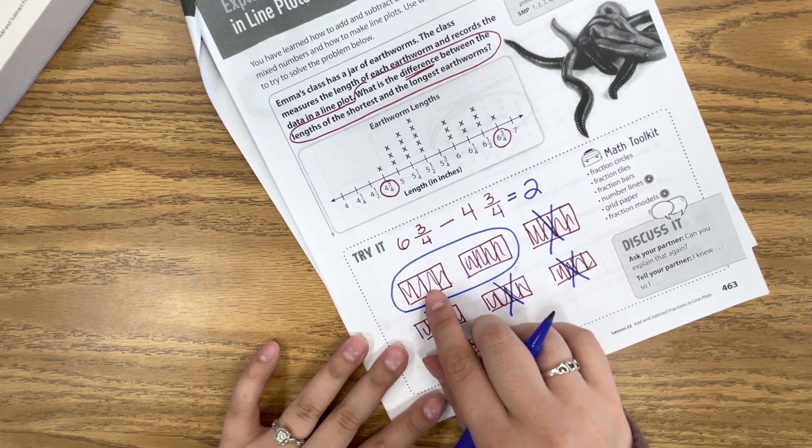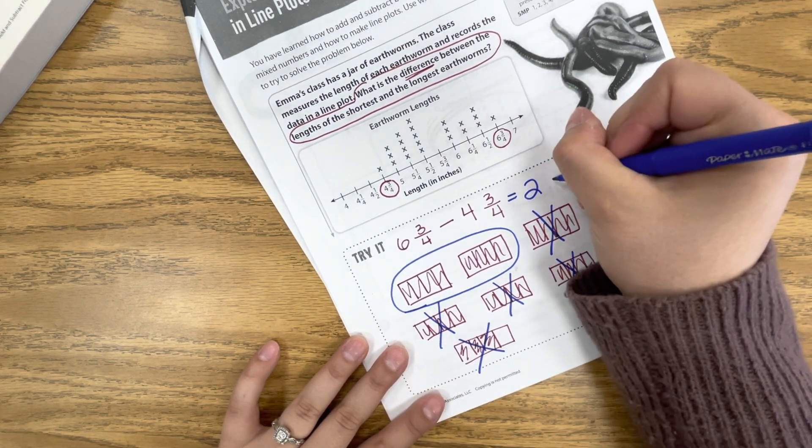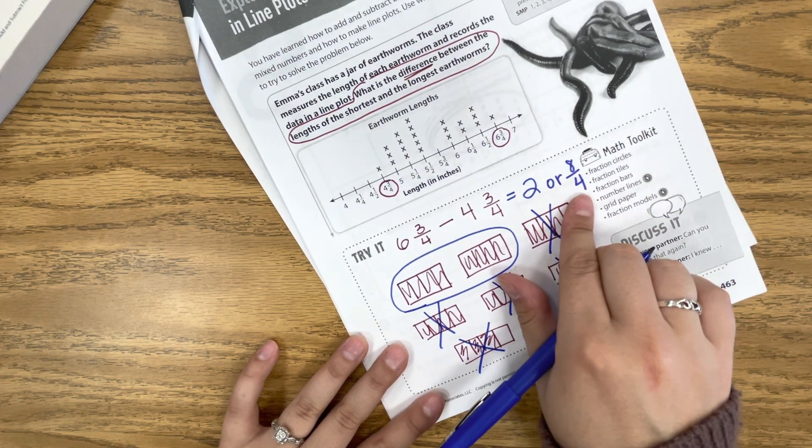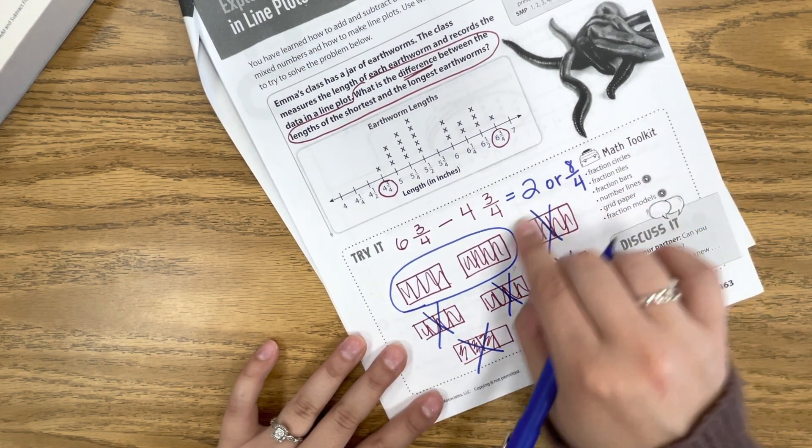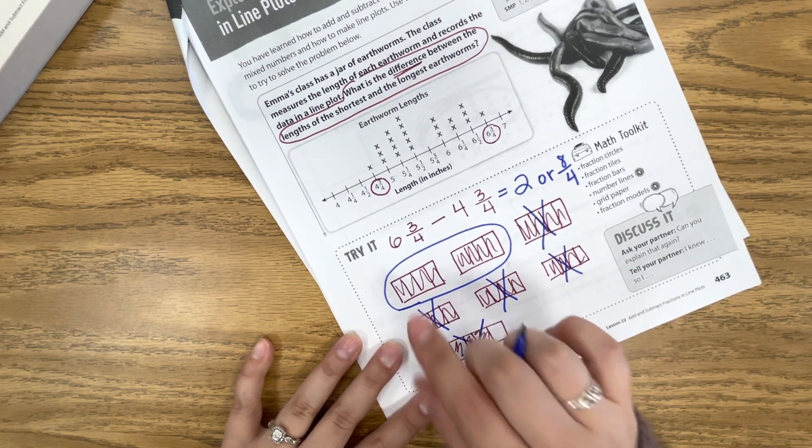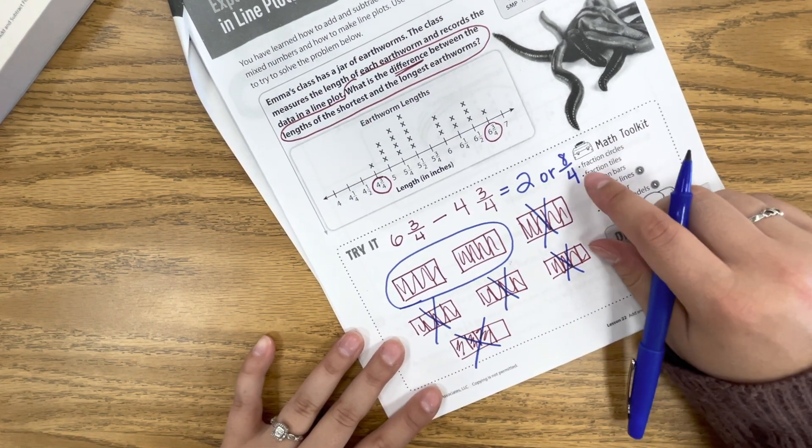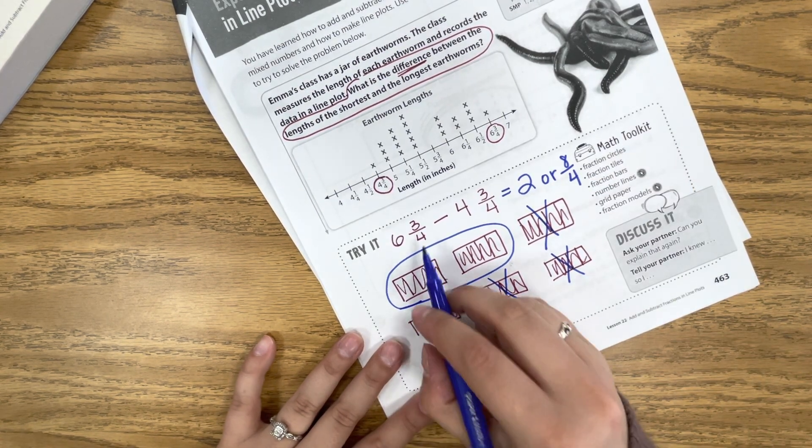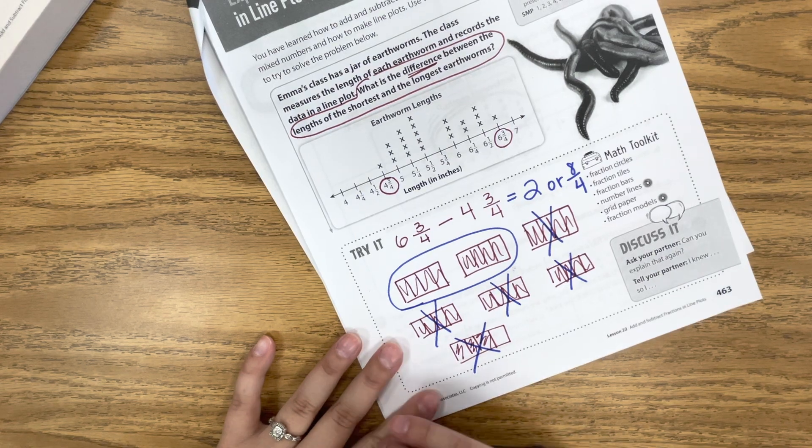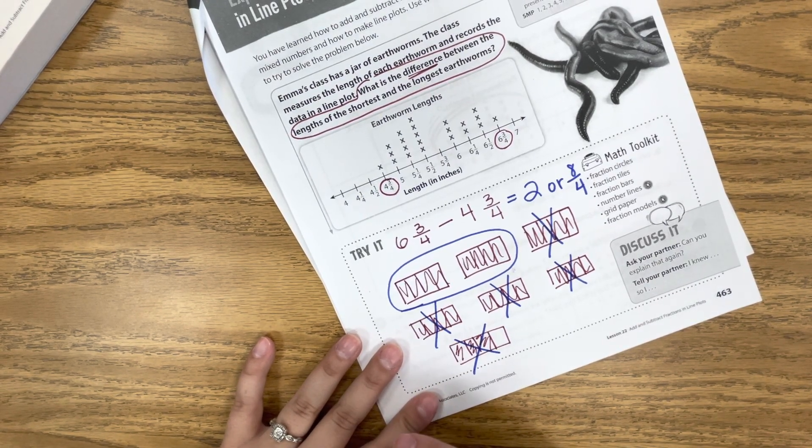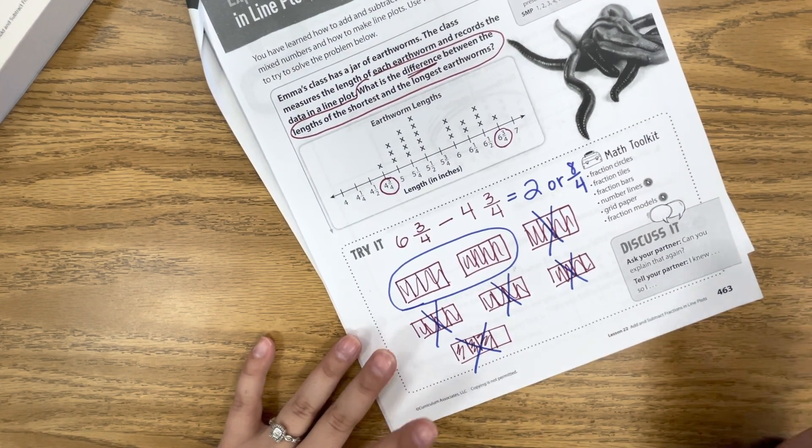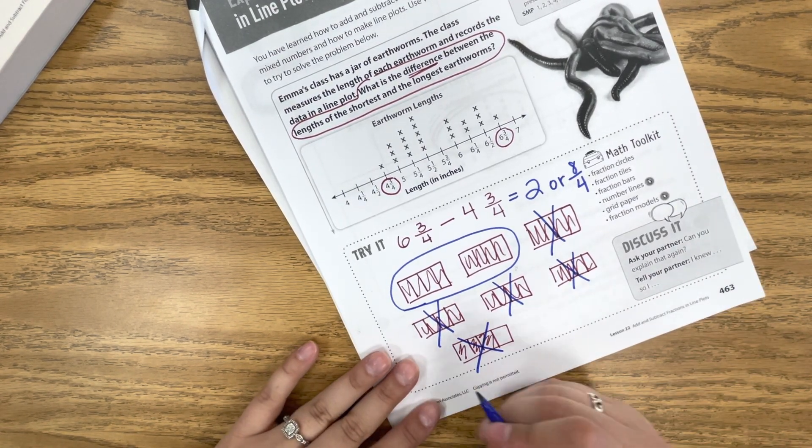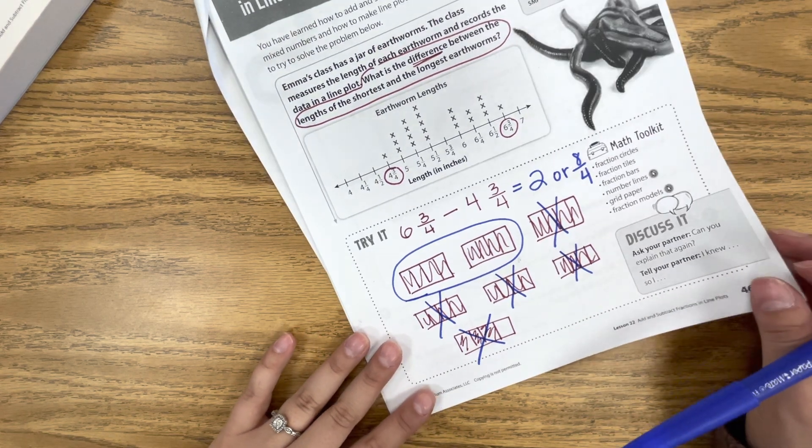And we could also say 1, 2, 3, 4, 5, 6, 7, 8 fourths, which would reduce to 2, right? 8 divided by 4 is 2, and we have 8 total parts, and they're divided up into fourths. You don't have to worry about this too much. I just wanted to show you how you could also show 2 with having 4 as a denominator. So if you have any questions, please pause and ask me. You also could have done a number line with this. So you could have started at 6¾, and then jumped backward 4, and then go back another ¾. But for this, I feel like pictures are the best strategy. But again, it's whatever works best for you.